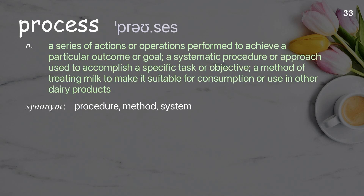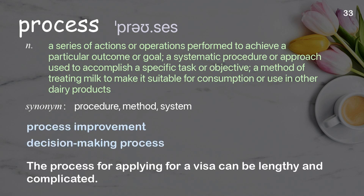Process: a series of actions or operations performed to achieve a particular outcome or goal; a systematic procedure or approach used to accomplish a specific task; a method of treating milk to make it suitable for consumption. Examples: process improvement, decision-making process. The process for applying for a visa can be lengthy and complicated.